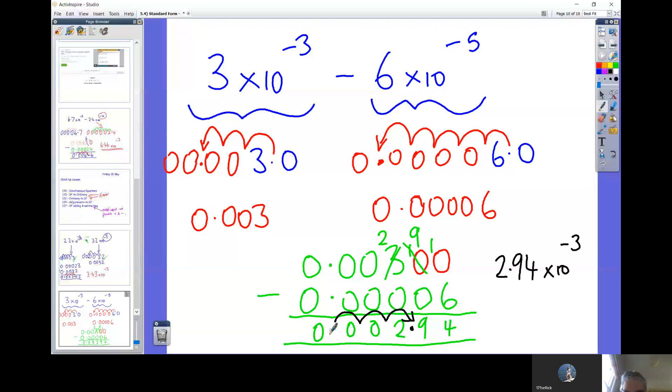So we've got a final answer in normal number format of 0.0029. Now we're going to have to put that back into standard form. So another skill you've practiced earlier this week. So the decimal point has to be there because the first number has got to be between 1 and 10. Our opening number is 2.94 therefore. And how many hops has the decimal point done to move from where it starts to where it finishes? That's 3 hops.